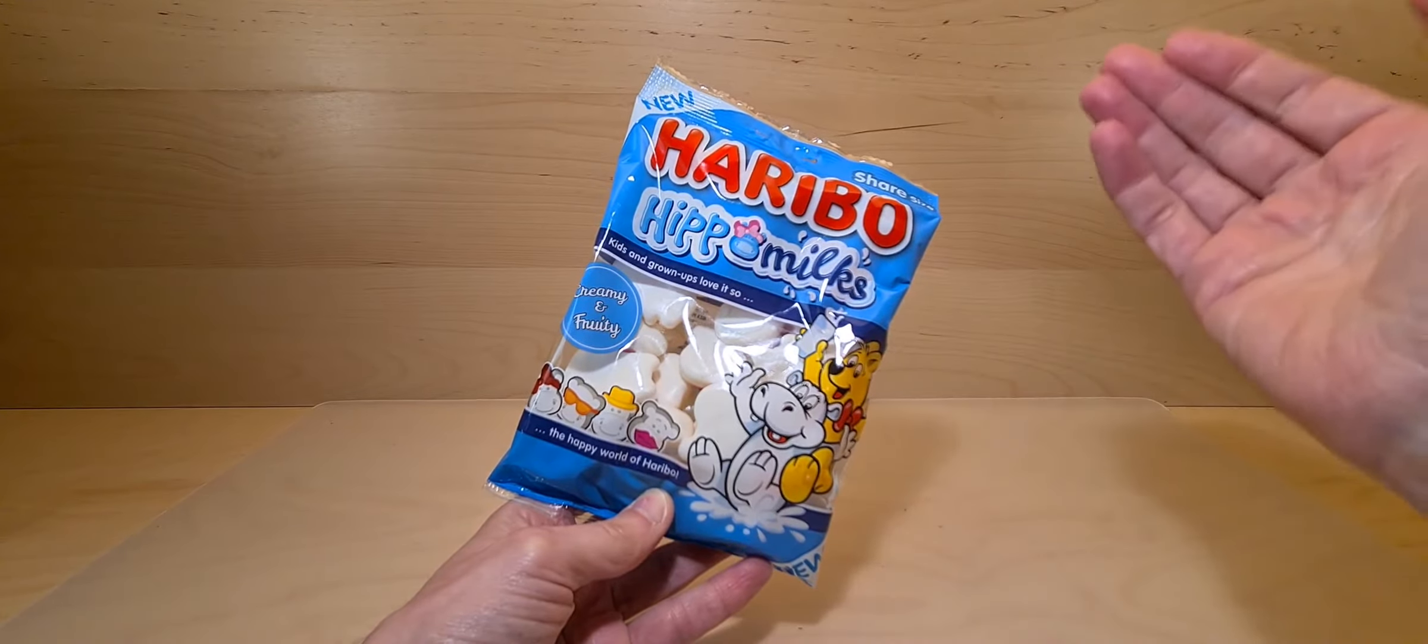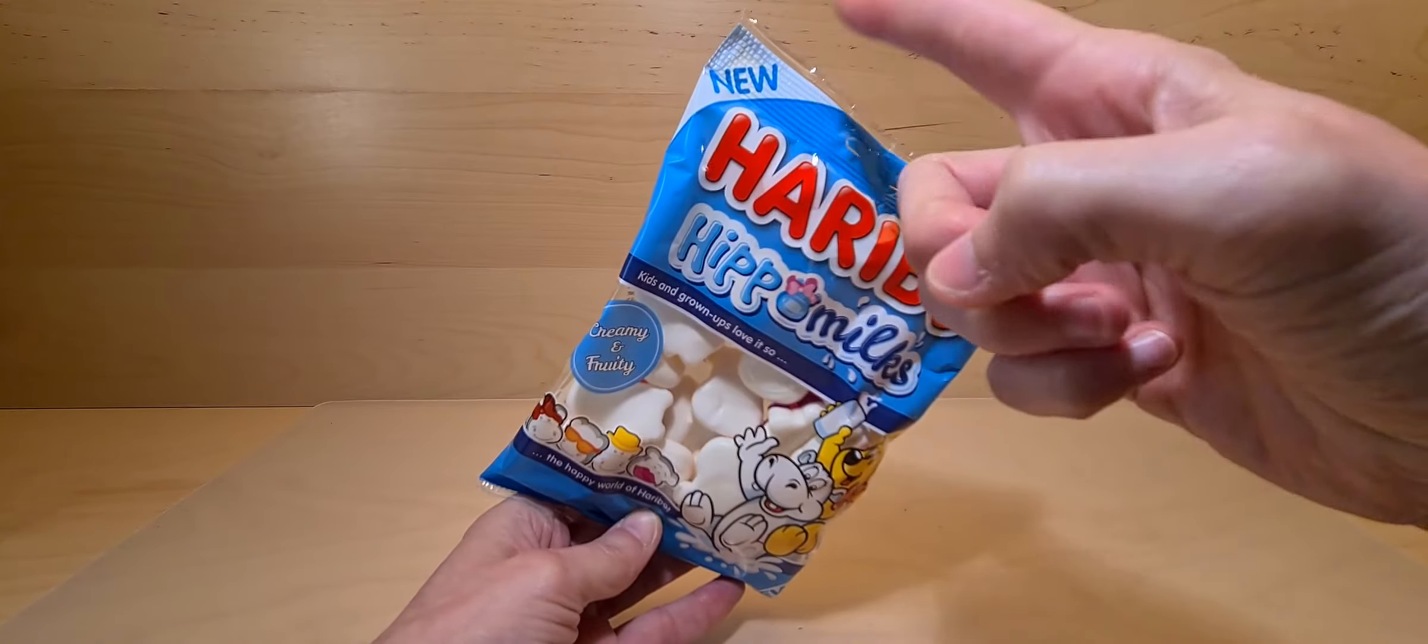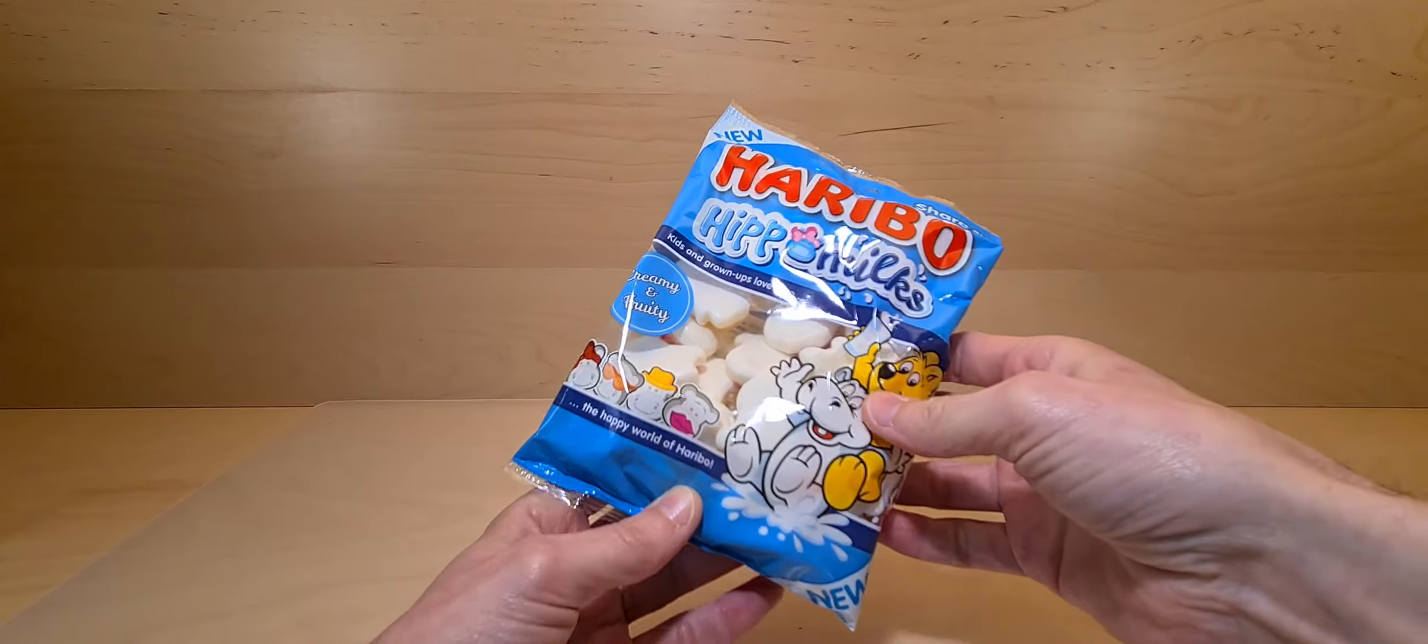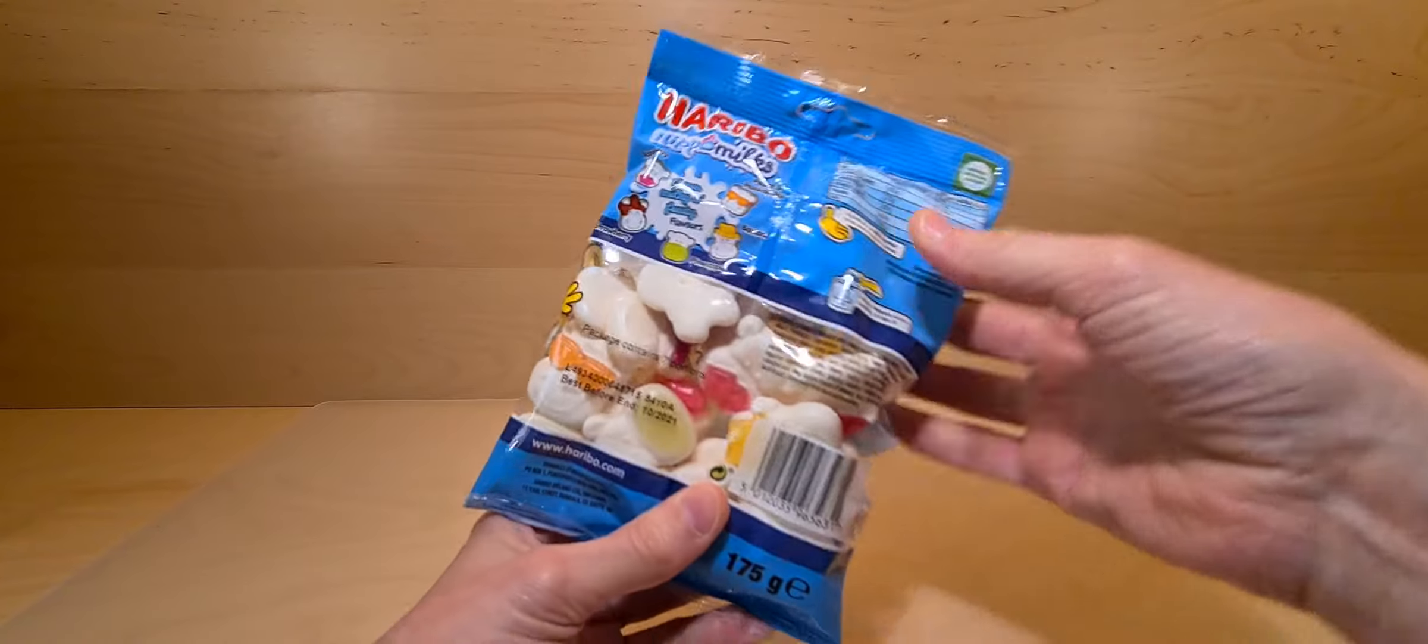This is a sweet. This came from Poundland and it's new. You can tell by the top corner it says new. Yeah, this is cool. It's a new thing. We like new things.